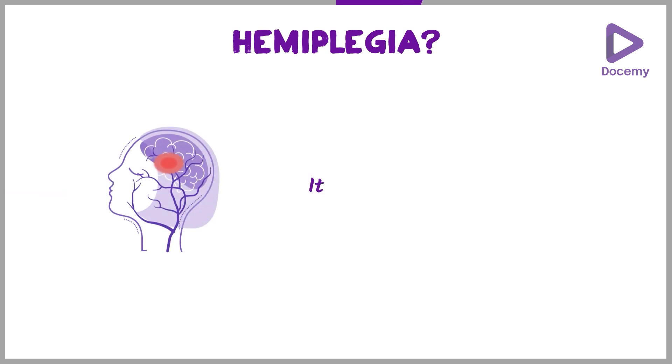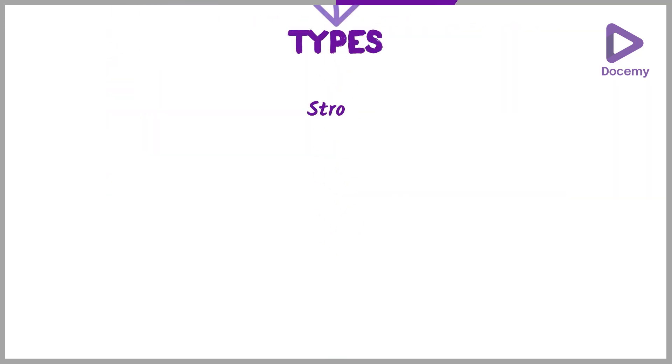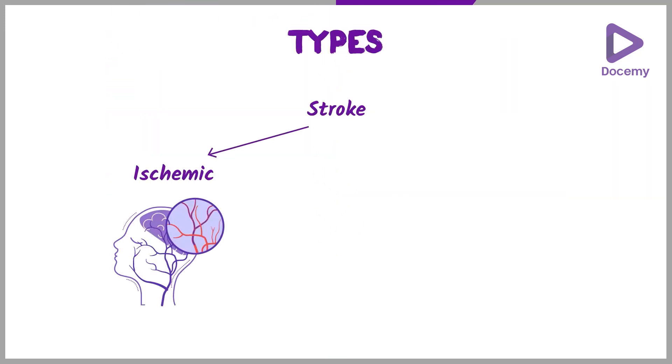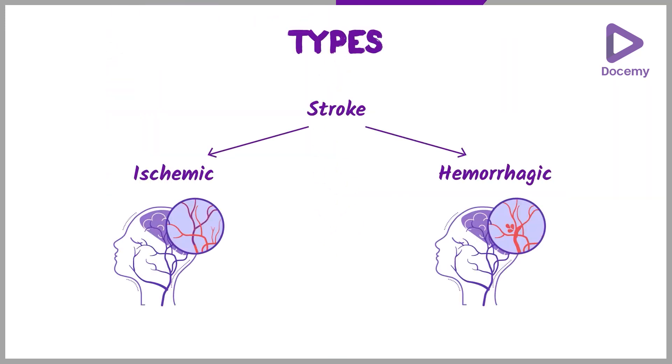Most frequently, hemiplegia develops acutely after a stroke, which can be of two types: it could be an ischemic stroke or a hemorrhagic stroke.